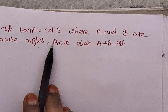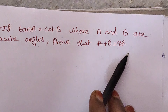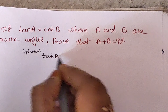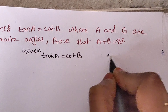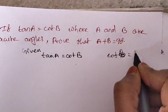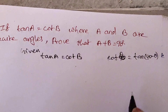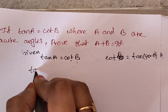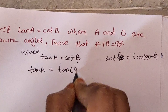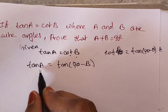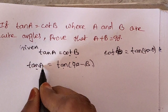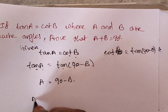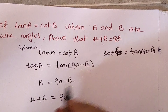Next question: if tan A equals cot B, where A and B are acute angles, prove that A plus B equals 90. Cot theta can be written as tan(90 minus theta), so cot B can be written as tan(90 minus B). Therefore tan A equals tan(90 minus B). Since both are tan ratios, the angles are equal: A equals 90 minus B. Transposing, A plus B equals 90 degrees.